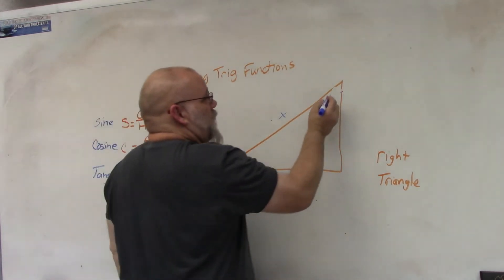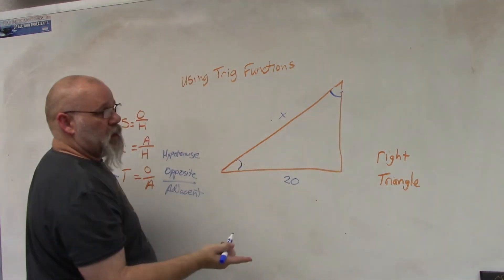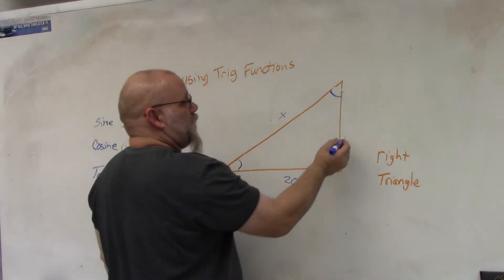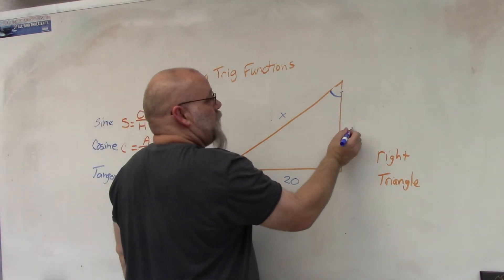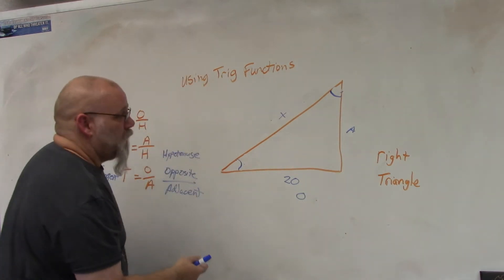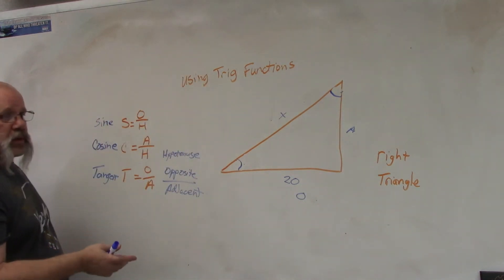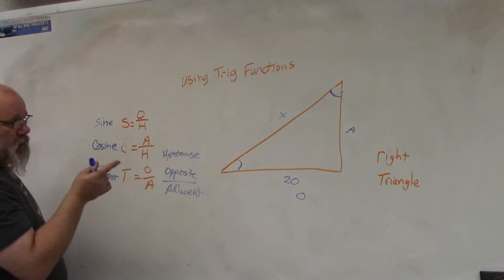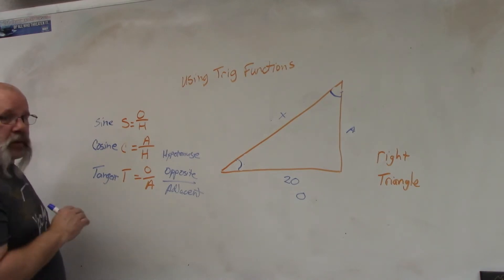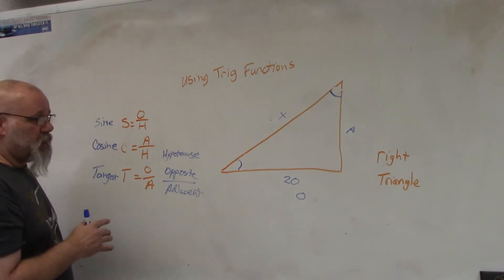If I go over to the other angle, this side becomes the adjacent side and the other side becomes the opposite side, and I can still use the same formulas to find those sides.